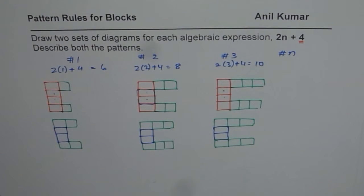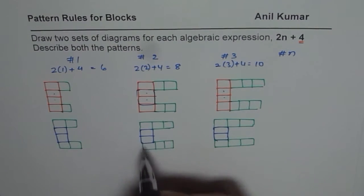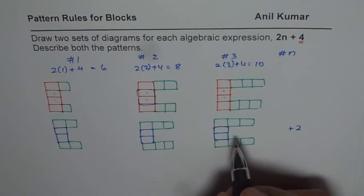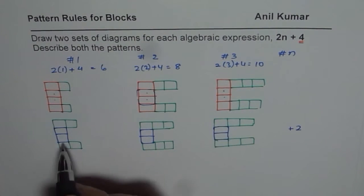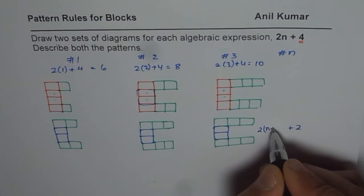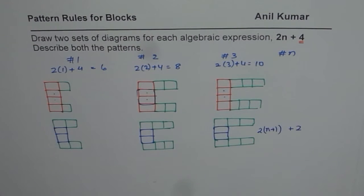Once you make it like this, you can write a new equation. Two is fixed, and there are two sets of n + 1, so it's 2 times (n + 1) plus 2. That's the new equation.